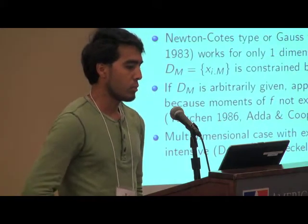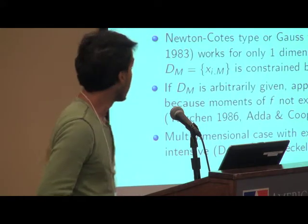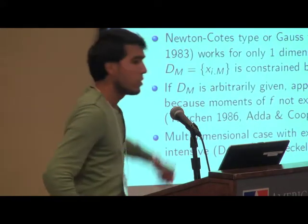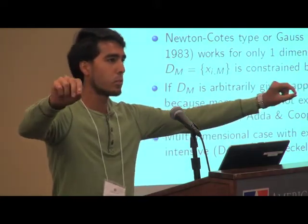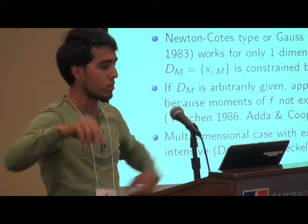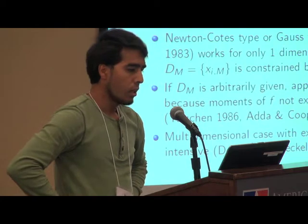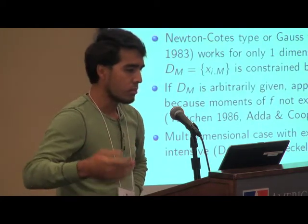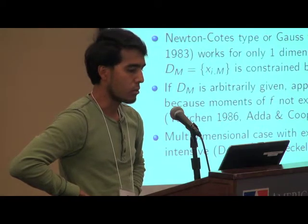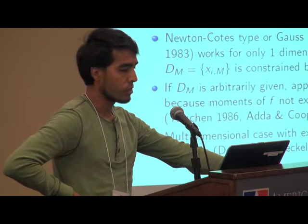Now, let me compare my method to existing method. The existing method all uses some kind of quadrature formula listed here. So, you have some discrete points, and you evaluate the density at these discrete points, and then you take some weighted average. And you can use a standard quadrature formula like Newton-Cotes or Gauss-type methods.